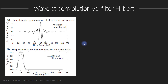Let us start by comparing wavelet convolution and filter-Hilbert. What you see in this plot is a wavelet in the time domain — the real part of a Morley wavelet — and the filter kernel from a FIR bandpass filter. You can see that they are not identical, but they are really similar. I have already discussed this a few videos ago when I introduced you to the FIR filter kernel construction procedure. So they are quite similar to each other.